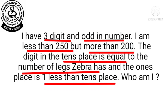So, zebra has how many legs? 4 legs. So the 10th place digit will be 4. And in the next line, the 1's place digit is 1 less than the 10th place. So in the 10th place 4 is there, so 1 less means 4 minus 1, we will get 3.